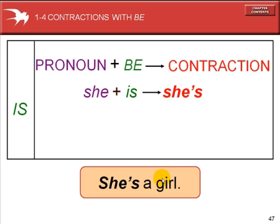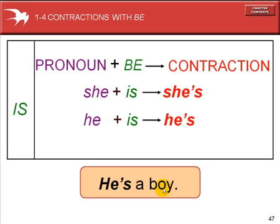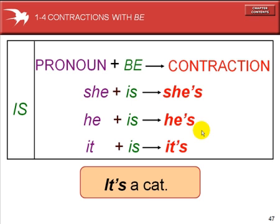She is a girl — she's a girl. You can also use a contraction. To remove the I, you use an apostrophe. She's a girl. With the masculine form, he is a boy — he's a boy. Same meaning. It's a cat. The contraction of 'it is' is 'it's'. It's a cat.